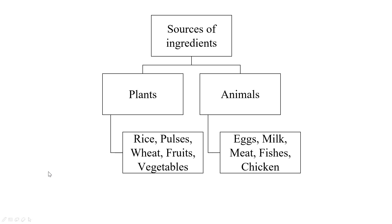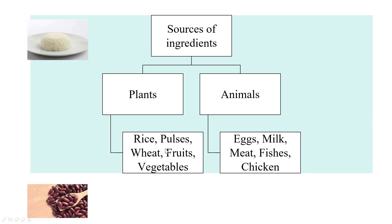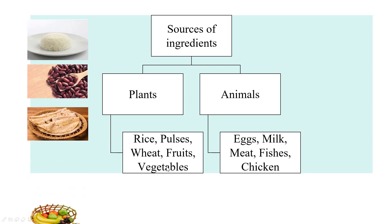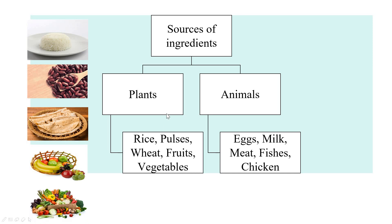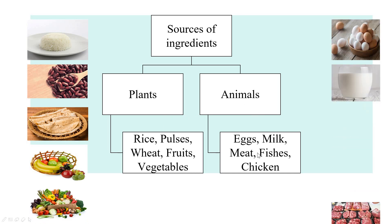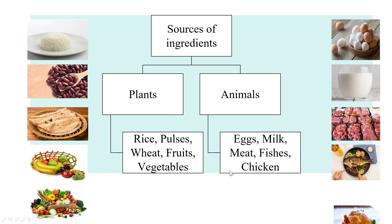After studying about ingredients, let's now study about sources of ingredients. Principally, there are two sources of ingredients — plants and animals. All of us know that we get rice, pulses, wheat, fruits and vegetables from plants. Whereas we get eggs, milk, meat, fish and chicken from animals. Thus, there are two main sources of ingredients: plants and animals.